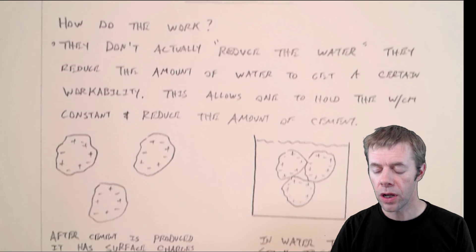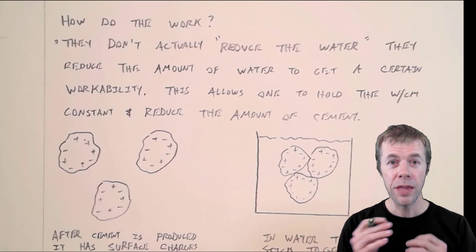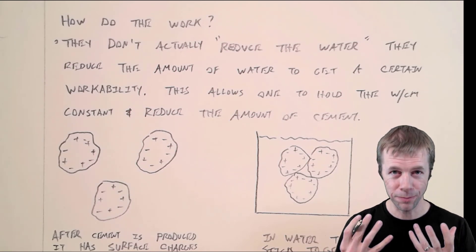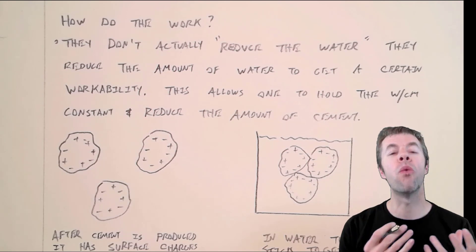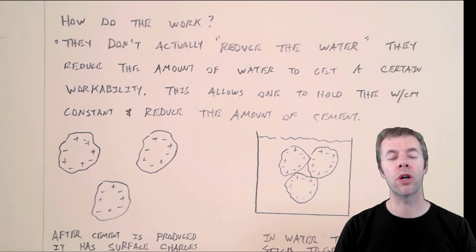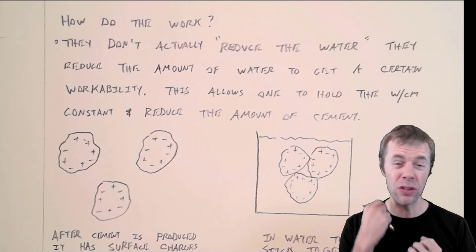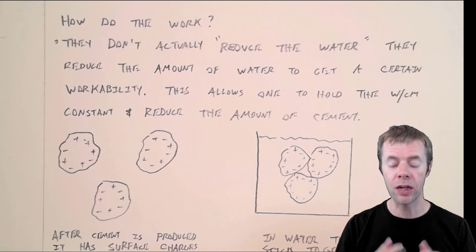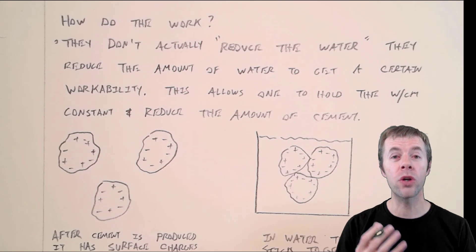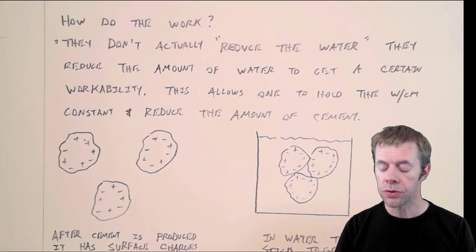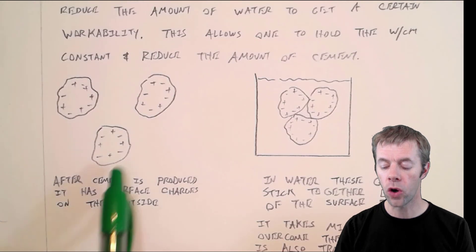Water reducers are dispersants. They move things apart. They don't actually reduce water. They reduce the amount of water that you need to get a certain workability or slump. This allows one to do all kinds of tricks.